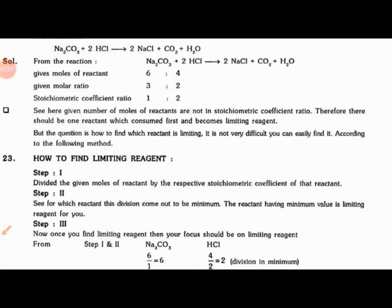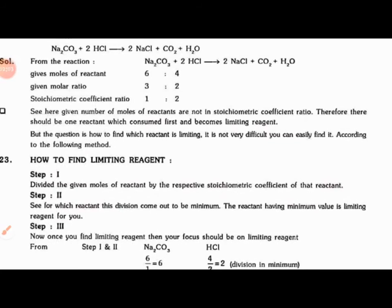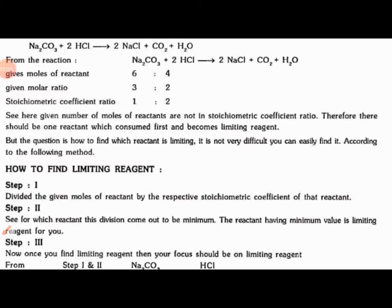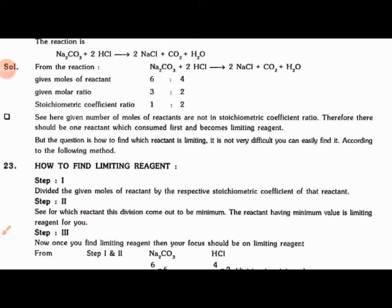The given number of moles of reactants are not in stoichiometric coefficient ratio. Therefore, there should be one reactant which consumes first and becomes limiting reagent. What is the stoichiometric coefficient ratio?